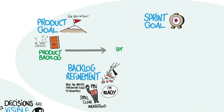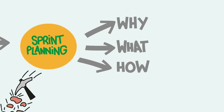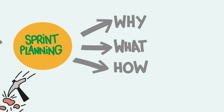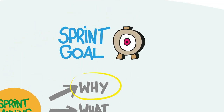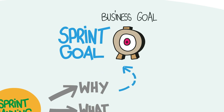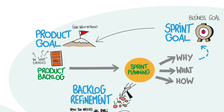The Scrum Team takes on work through the sprint planning process, which addresses three questions: why, what, and how. Why are we doing this sprint? The answer, called the sprint goal, is a business goal that represents the best step forward to achieve the product goal. It is not a stretch goal — the team believes they can accomplish the sprint goal during the sprint.